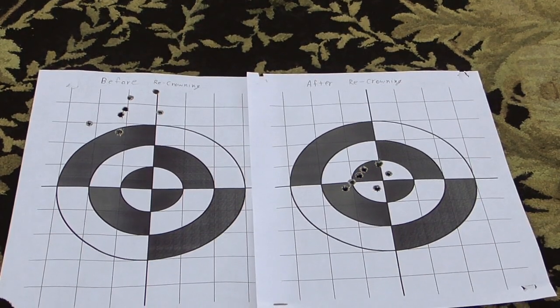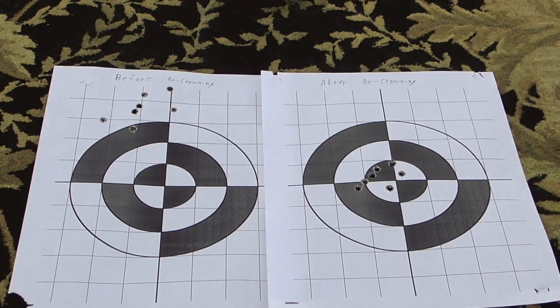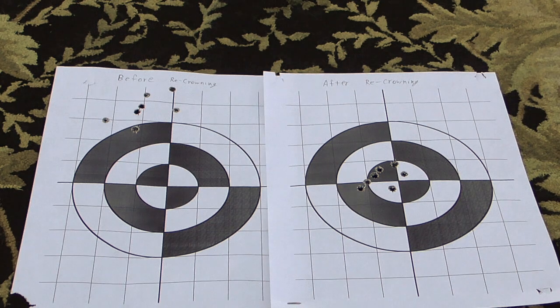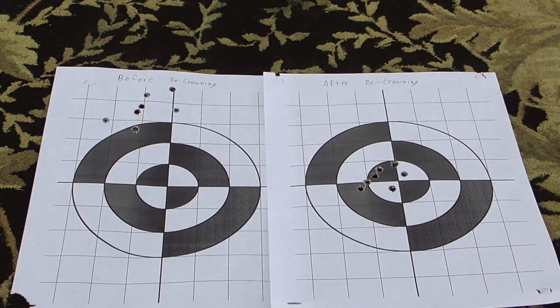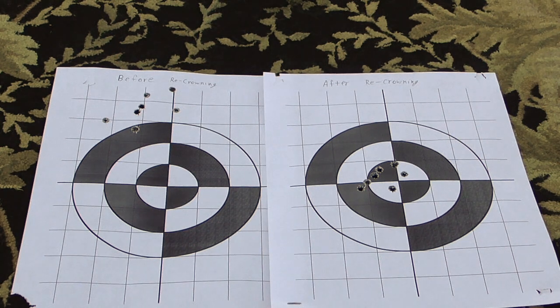Well, comparing the group size before and after crowning the muzzle, I'm definitely seeing an improvement. The first group on the left looks like roughly a two to two and a half minute of angle group, while the group that I shot after re-crowning is more like a one and a half minute of angle group.